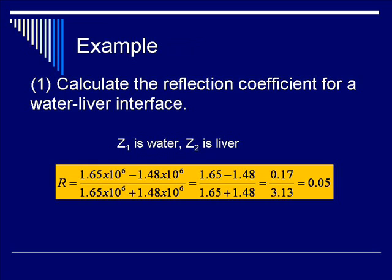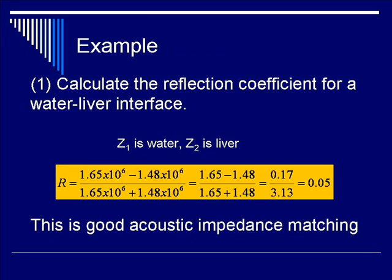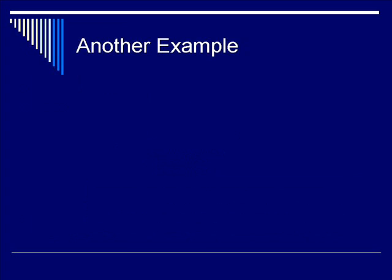This means that 5% of the wave is reflected back towards the transducer, while the other 95% continues to propagate through the interface and into the liver. This is an example of a good acoustic impedance matching. As you can see in soft tissue, because the numbers are so close for different materials, this works to our advantage.